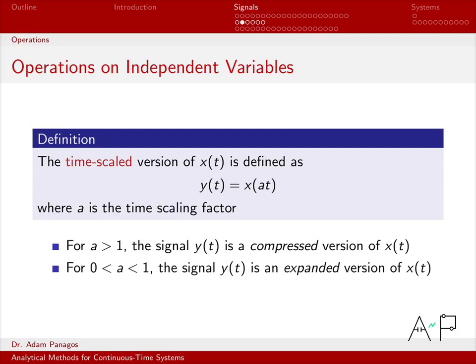Depending on the value of a, one of two things can happen. For a larger than 1, we have what we call a compressed version of the signal. We'll do some examples here in a minute, but essentially whatever x(t) looked like originally, y(t) will look just like that except it will have been shrunk on the time axis.